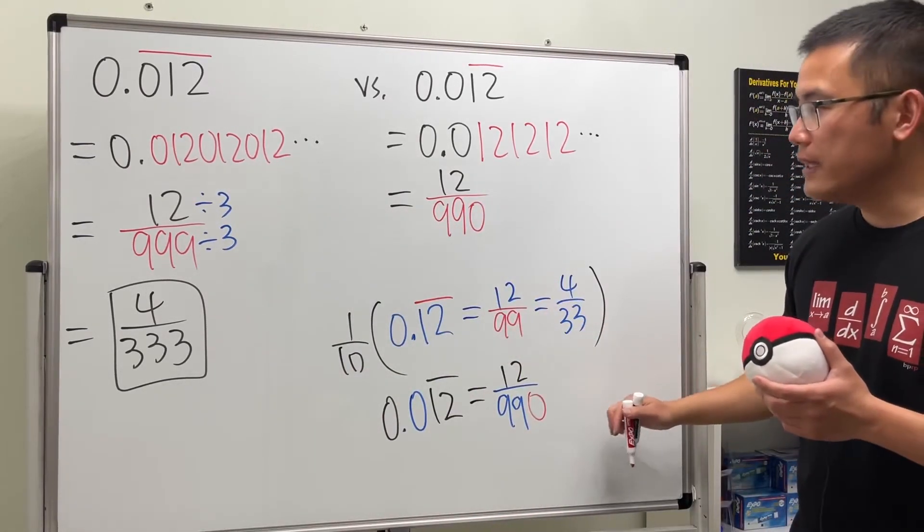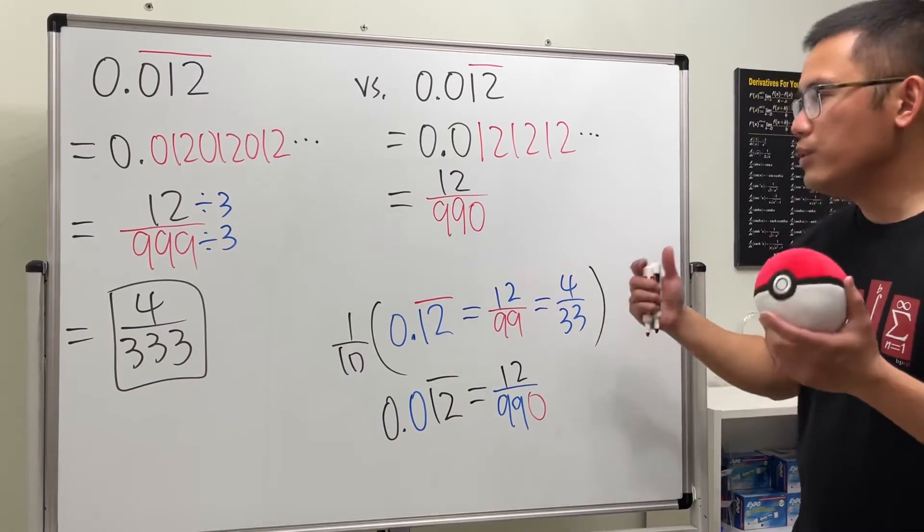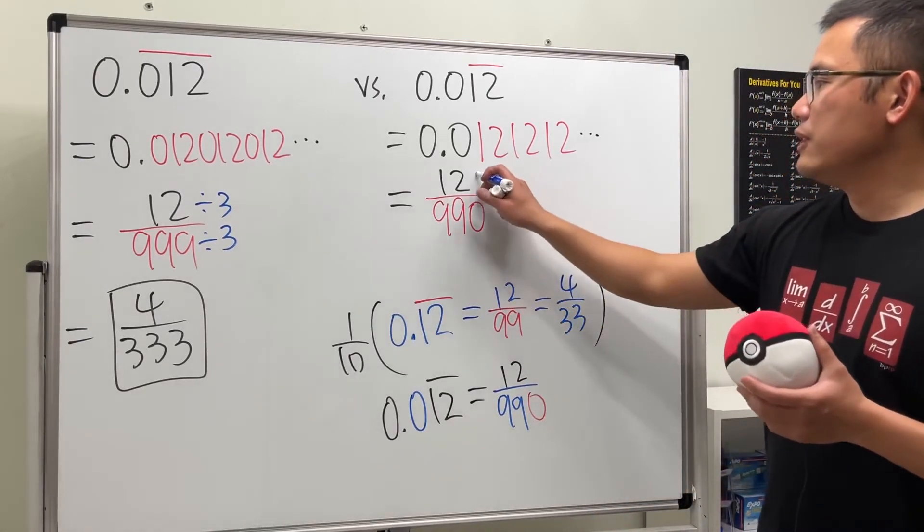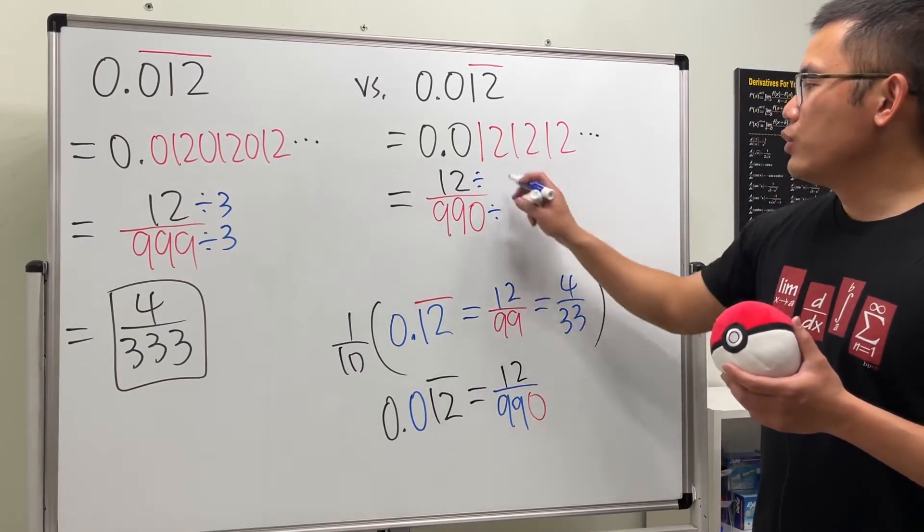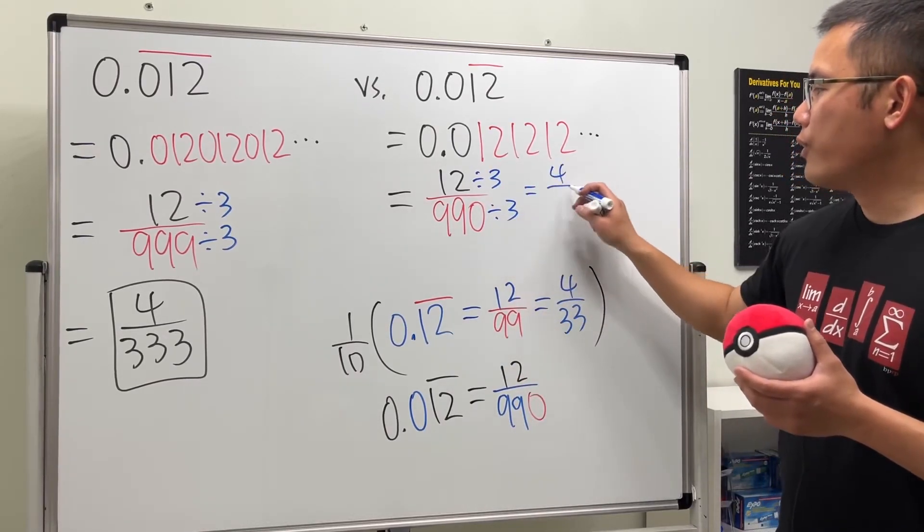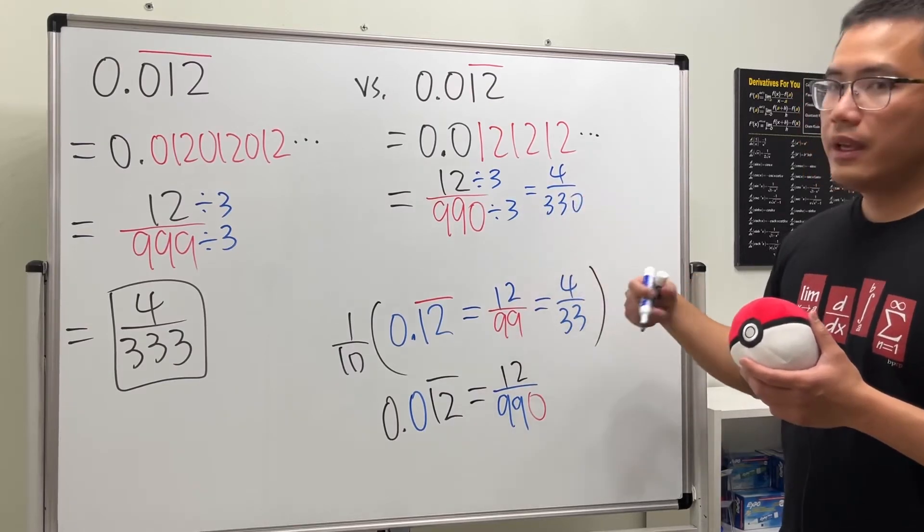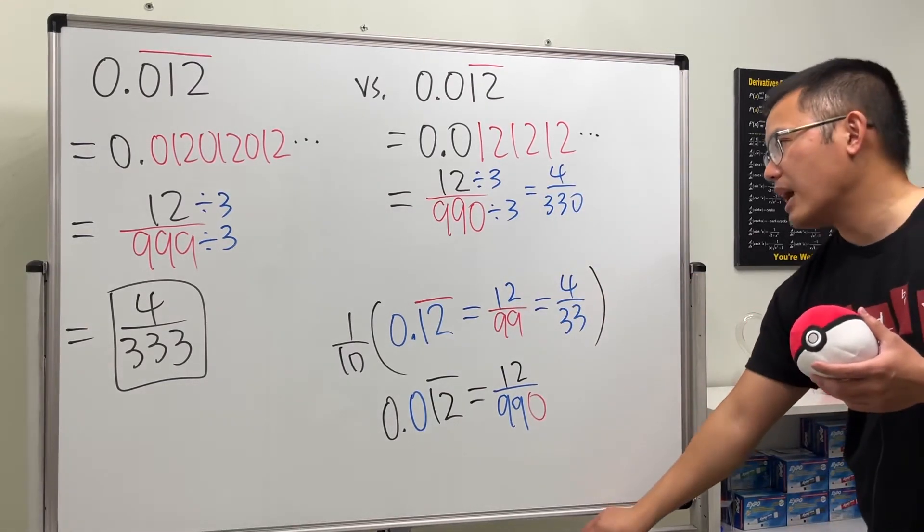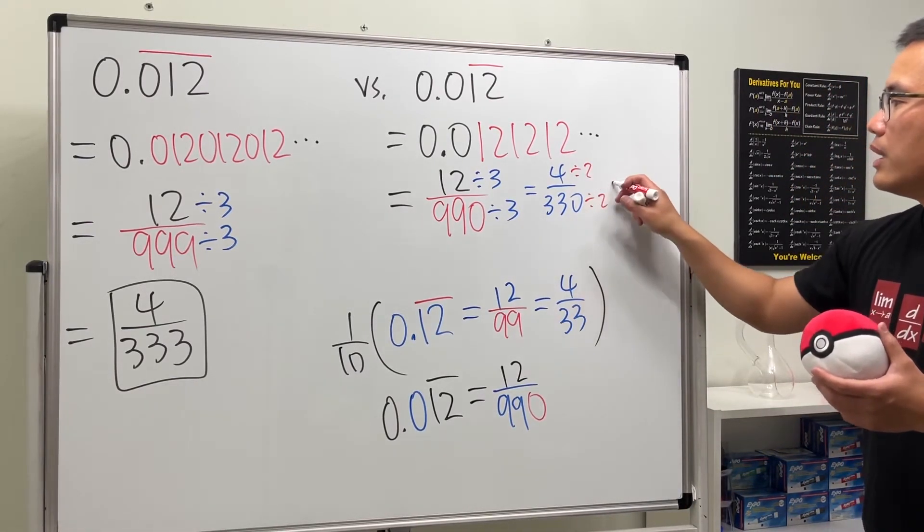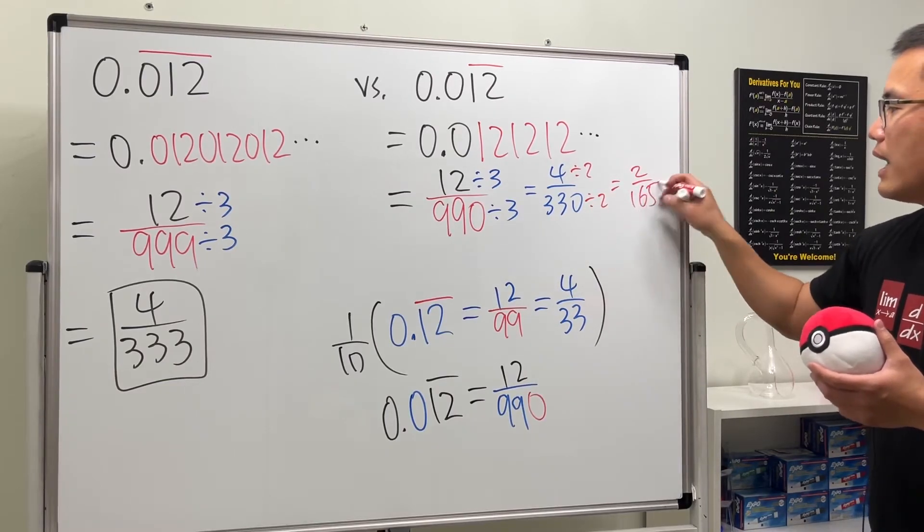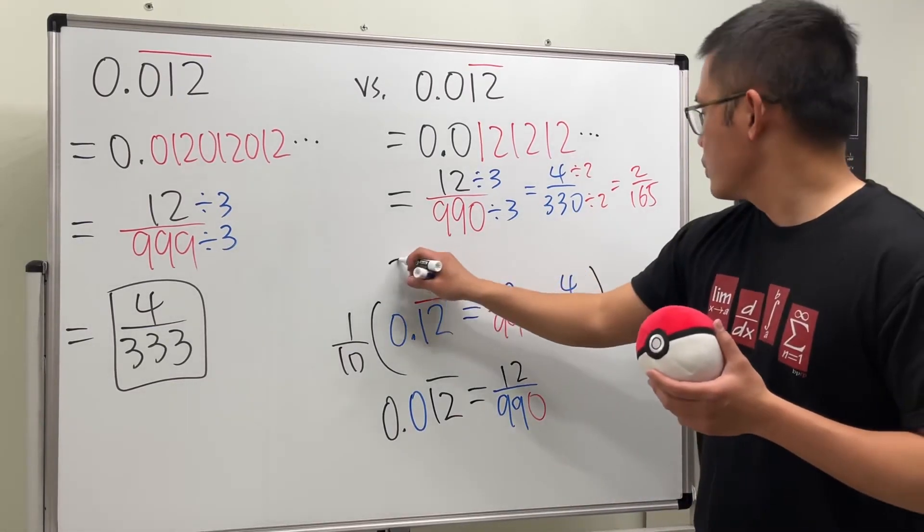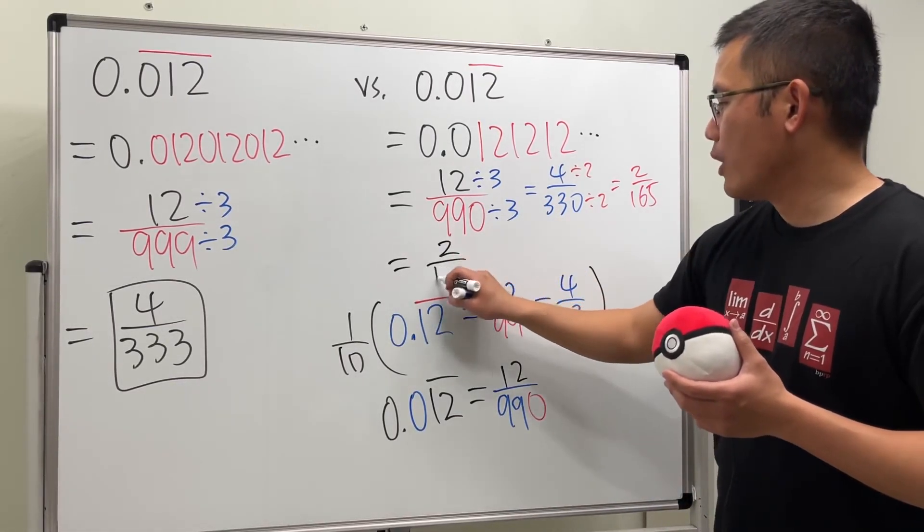So, just take a look right here. And then, you ask yourself, can you reduce this? And the answer is yes. Divide this by 3 first, like what we did earlier. And that will give us 4 over 330. And in fact, we can keep going. We can divide this by 2. And we will get 2 over 165. So, the answer is just 2 over 165.